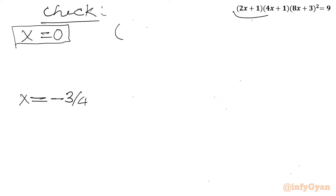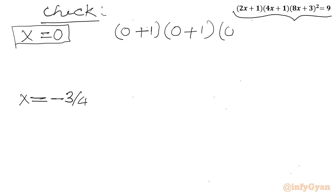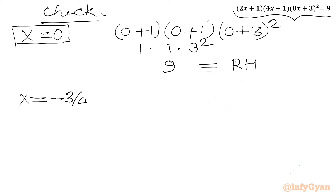For x = 0, substituting into the original equation: (0+1)(0+1)(0+3)² = 1×1×9 = 9, which equals our RHS. Hence x = 0 is verified.